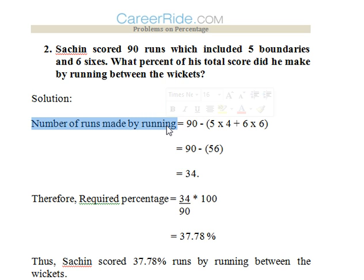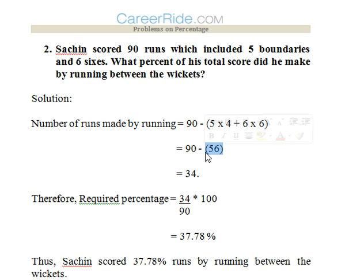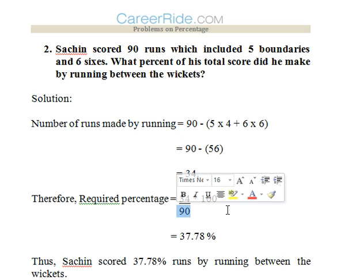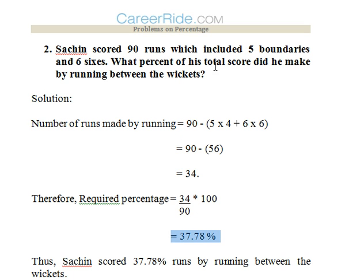Number of runs made by running = 90 minus all the boundaries and all the sixes. So 5 x 4 + 6 x 6 = 56. Therefore 90 - 56 = 34. So the number of runs made by running would be 34. Total number of runs = 90. So 34/90 x 100 = 37.78%. This is the percentage of his total score which he made by running between the wickets.